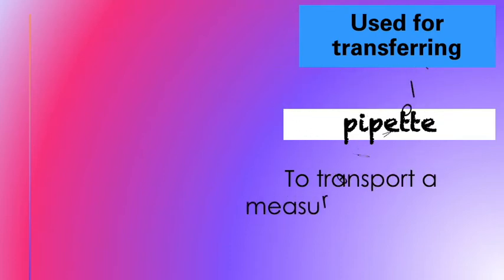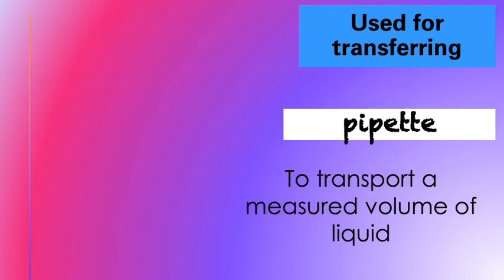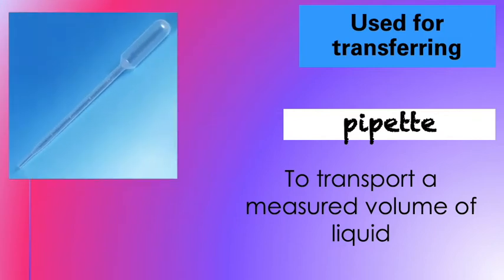The next one is a pipette. It is used to transport a measured volume of liquid. Here's a picture of a pipette and another one.